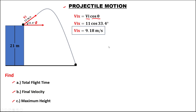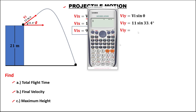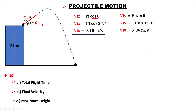We also need to find the initial velocity for y. Using this formula, the initial velocity times sine theta. So to find the initial velocity for y, that's 11 times sine 33.4, which equals 6.06 meters per second.